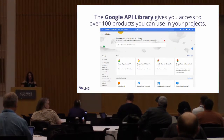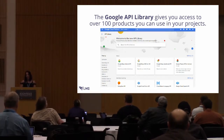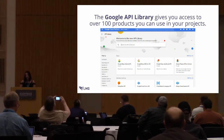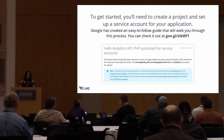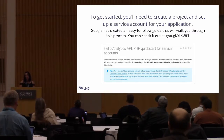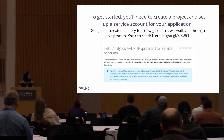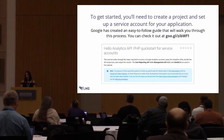Google has a pretty extensive API library that gives you access to basically everything Google does — Maps, Analytics, Drive, basically anything. You can check that out at their API URL. To get started, you need to create a project and set up a service account, which is a little time-consuming. Google has a guide that walks you through the whole process. If you check out my blog post, there's a link to the guide, and once you get through that you'll have everything you need set up.